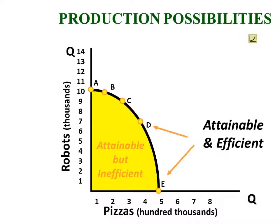It's May of 2012 currently, and the unemployment rate in the United States is approximately 8.2%. That probably underestimates the hundreds of thousands — or even millions — of people who have given up looking for jobs. So anywhere inside the curve represents attainable but inefficient.